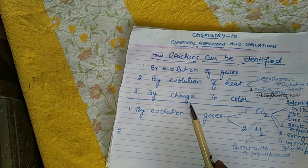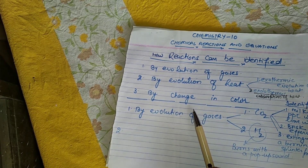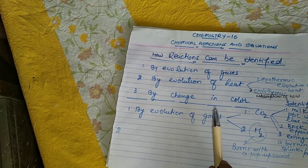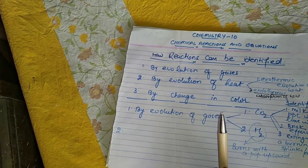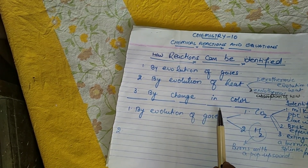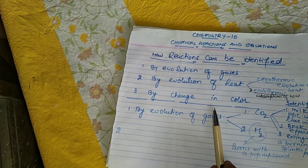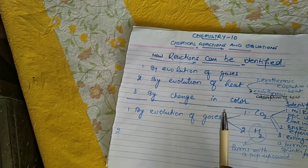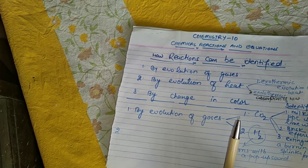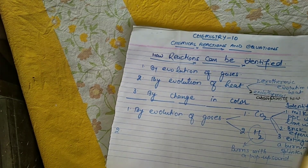The third way to identify a chemical reaction is by a change in color. This is the most common and the easiest method. Whenever a chemical reaction proceeds, there is a change in the color of the substance — the original color gets changed and a different color is formed.